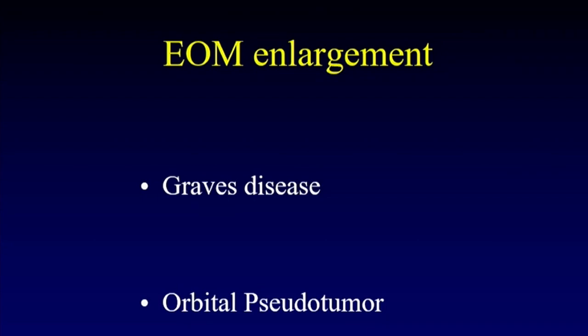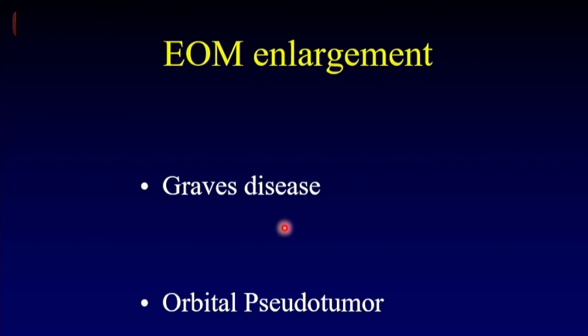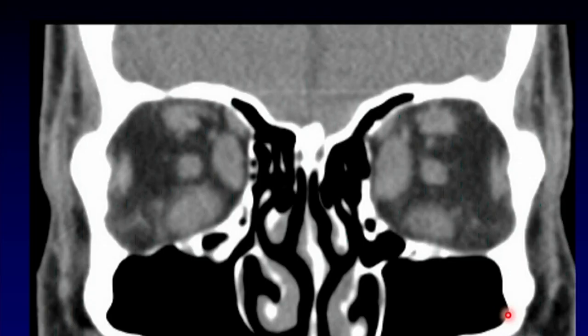There is a classic differential diagnosis between Graves disease, which is a thyroid orbitopathy, and orbital pseudotumor, which is an autoimmune inflammatory disease. Radiologists love to talk about the difference between these two and how you distinguish them. Clinicians laugh at us because one of these hurts and the other one does not — Graves disease is painless, orbital pseudotumor is painful — so they almost never appear on the same differential diagnosis for clinicians. Here's how we can tell them apart radiologically if you ever need to.